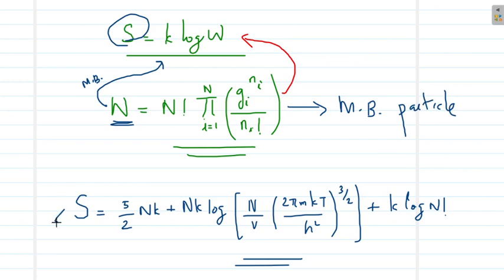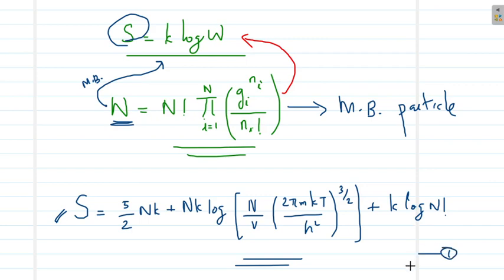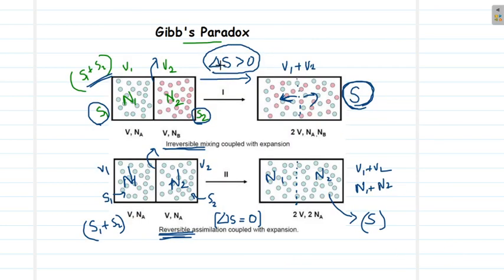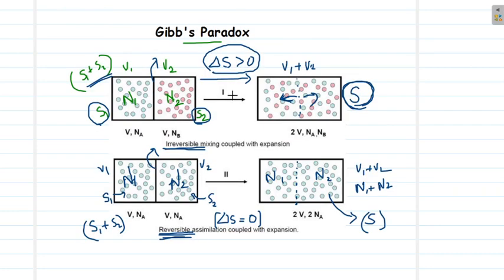We now have the entropy equation for Maxwell-Boltzmann classical particles. We can calculate S1, S2, and S separately using this equation. If we calculate delta S from this equation for Case 1 — the mixing of different gases — we find delta S is greater than zero. So the theoretical prediction confirms the experimental observation in Case 1.